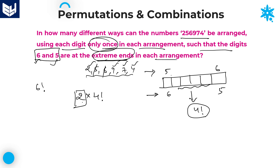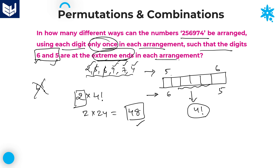Therefore, the required answer for this question is 2 into 4 factorial. The 2 indicates that we can keep 6 and 5 at the extreme ends in 2 possible cases. That is the reason why you need to multiply 4 factorial by 2. Here, 4 factorial is equal to 24. So 2 into 24 equals 48. This is the required answer. Many students would keep the answer as 6 factorial — that is a wrong calculation. The required answer for this question is 48.